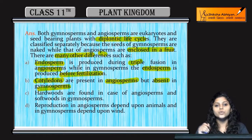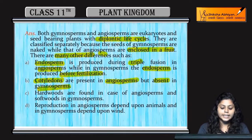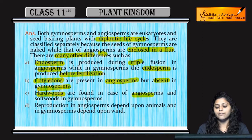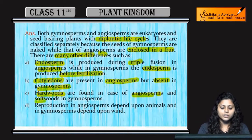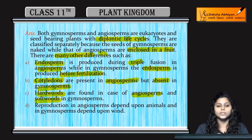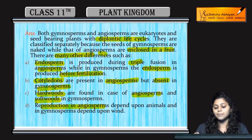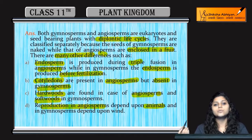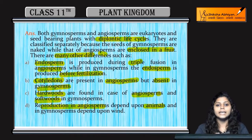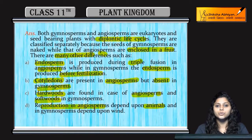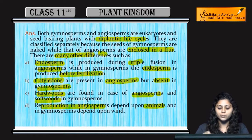Angiosperms से जो wood मिलती है, that is hardwood, whereas gymnosperms की wood is softwood. Reproduction in angiosperms depends upon animals — animals as a carrier use होते हैं — whereas in gymnosperms, wind takes up that action.